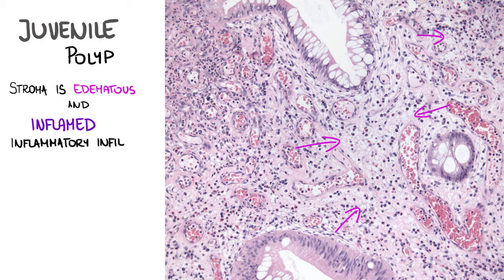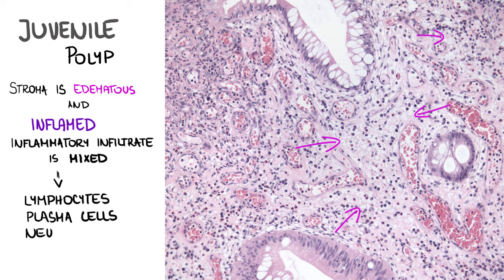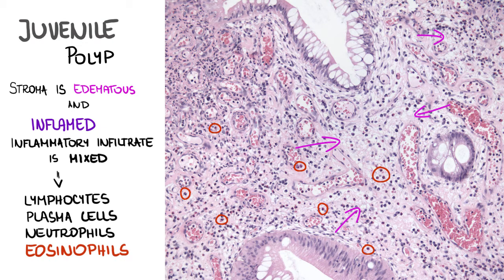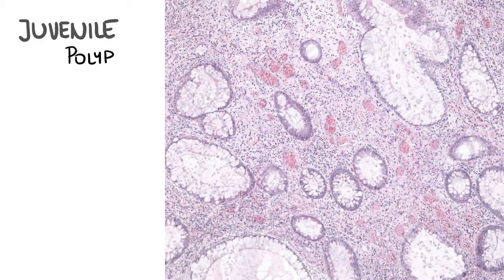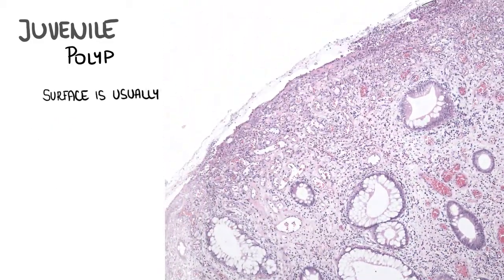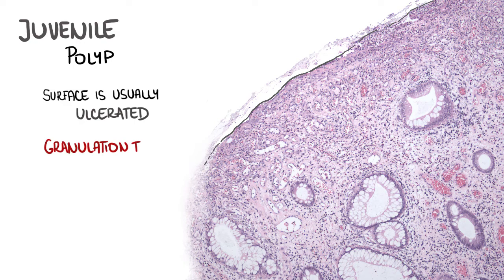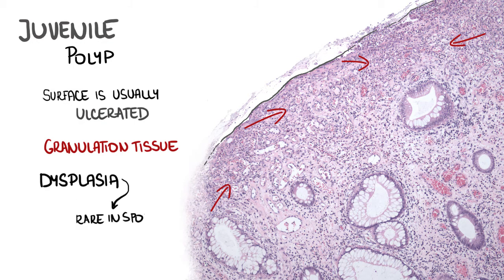The stroma is edematous and markedly inflamed. The inflammatory infiltrate is mixed, with the presence of lymphocytes, plasma cells, neutrophils, and especially numerous eosinophils. The surface is usually ulcerated, with granulation tissue on the bottom of the ulceration. Dysplasia is rare in sporadic polyps but more common in hereditary cases.